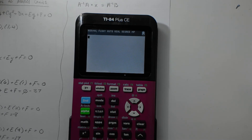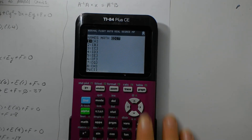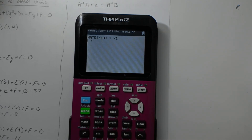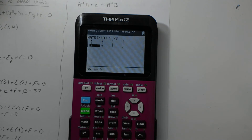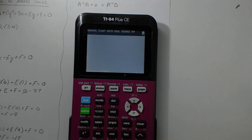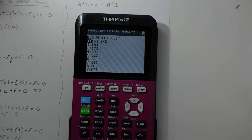I have my calculator here. You're going to start by going into your matrix — here it's second and then the matrix button. Scoot over to edit and go into matrix A, since the matrix we're inputting is our A value. That was a 3 by 3, and now we're just going to insert the values: 6, 1, 1, then 2, 2, 1, then 1, 4, 1. Now you're going to hit second and quit, then go into second matrix again, go to names, select matrix A, hit enter, then hit the inverse button and enter. That gives you your inverse.